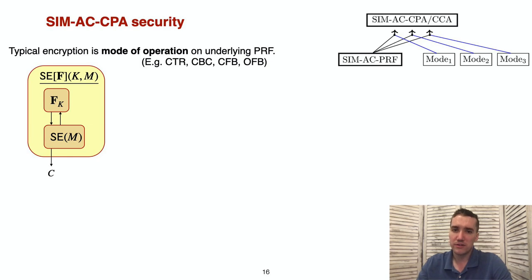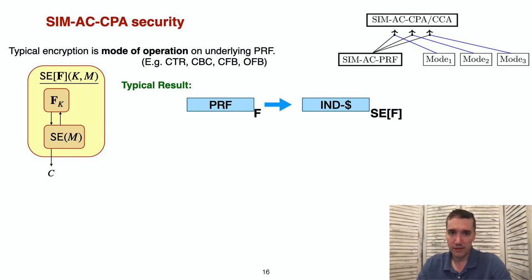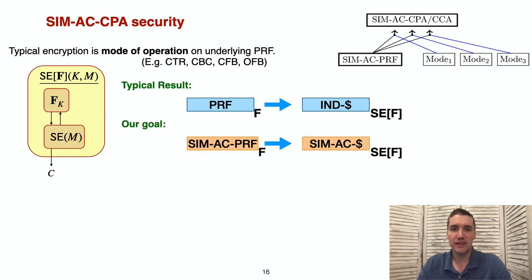This just leaves us with understanding how to show that schemes achieve SimACCPA security. Commonly, symmetric encryption schemes are constructed as modes of operation on some underlying PRF. Here we can think of the encryption being done by some algorithm which has only oracle access to the PRF. A typical result would say that the encryption scheme has ciphertexts which are indistinguishable from random if the underlying PRF is secure. Our goal is to provide the analogous results with our new definitions. A core part of this new security reduction involves showing how to use a simulator for the PRF to construct a simulator for the encryption scheme as a whole.